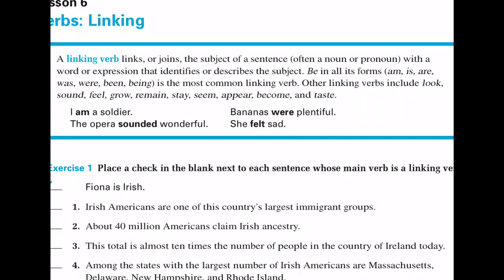The next type of verb we are classifying is the linking verb. A linking verb links or joins the subject of a sentence with a word or expression that identifies or describes that subject. Most common is be in all its forms: am, is, are, was, were, been, being. Other ones are the sensory linking verbs like look, sound, feel, seem, appear, and taste. And then there are the state-of-being or transformational linking verbs like grow, remain, stay, or become.